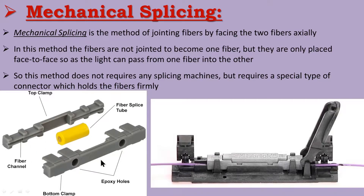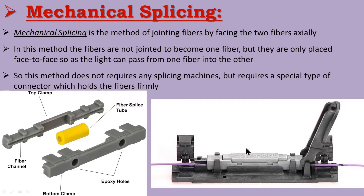The mechanical splicer has a top and bottom clamp. On the left side and right side, we place the fiber cables. We place the two fiber ends into the mechanical splicer. Using the clamps, we hold the fiber cables correctly and firmly in position. This is mechanical splicing.